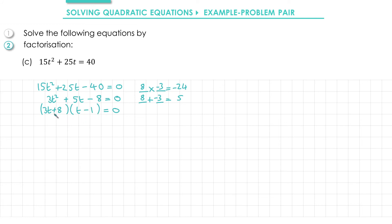Now that we've factorized, either the first bracket or the second bracket must equal 0. Using the first bracket we get 3t + 8 = 0. Subtracting 8 from both sides gives us 3t = -8, and then dividing by 3 gives us t = -8/3. Or using the second bracket we get t - 1 = 0, which gives us t = 1.